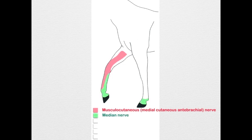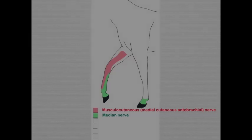The median nerve does not get any of the antebrachium. It just picks up the medial aspect of the metacarpus and then branches into medial and lateral palmar nerves, which will become the medial and lateral palmar digital nerves at the fetlock.